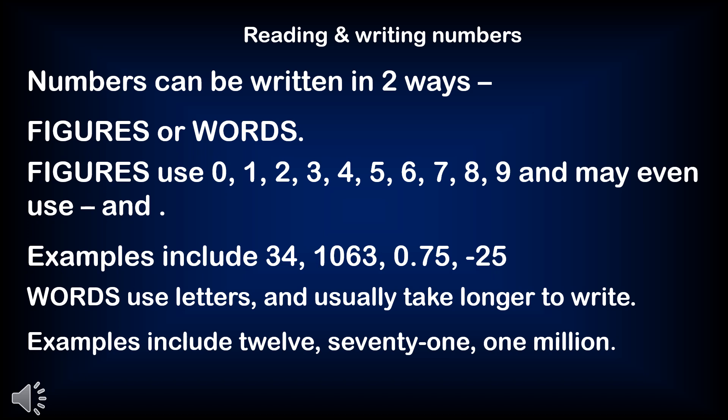Words use letters and usually it takes longer to write. Examples include T-W-E-L-V-E: 12. S-E-V-E-N-T-Y dash O-N-E: 71. O-N-E M-I-L-L-I-O-N: one million.